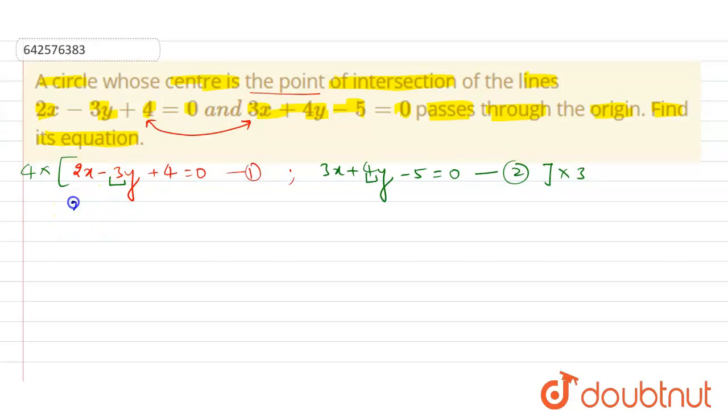Now our equations will become 8x - 12y + 16 = 0. And similarly, this will become 9x + 12y - 15 = 0.